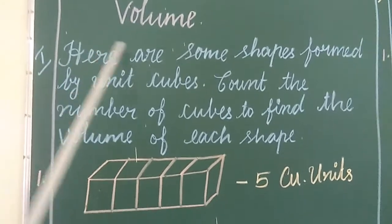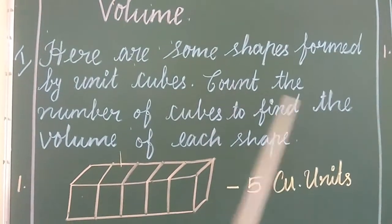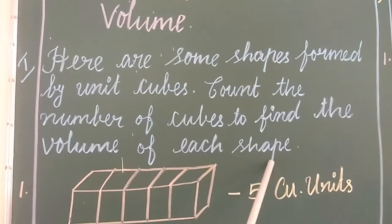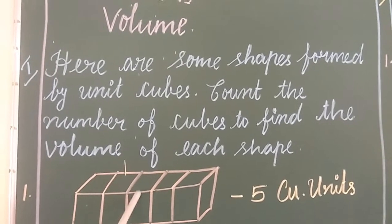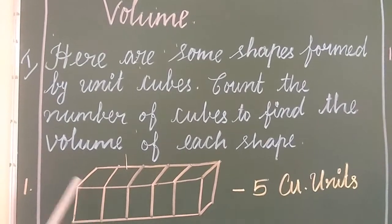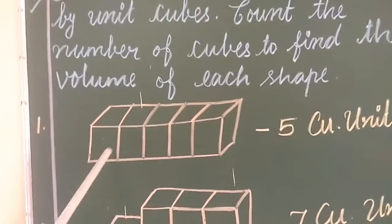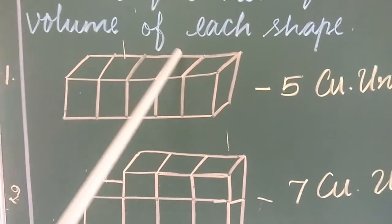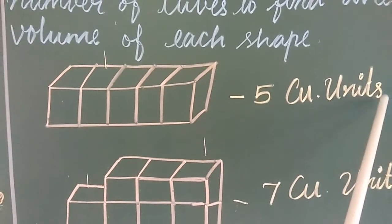First moment — here are some shapes formed by unit cubes. Count the number of cubes to find the volume of each shape. Let's see the first one. Let's count the cubes: 1, 2, 3, 4, 5. So the answer is 5 cubic units.